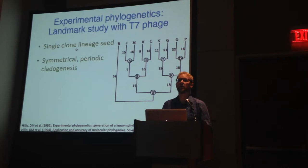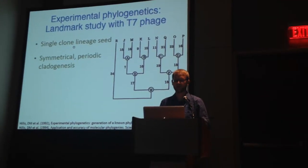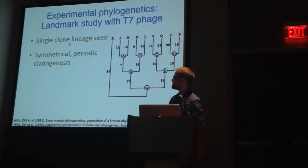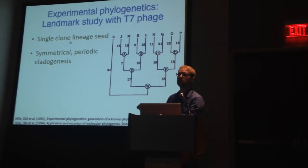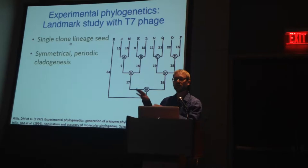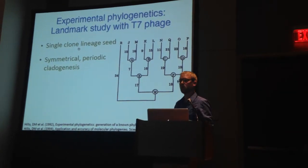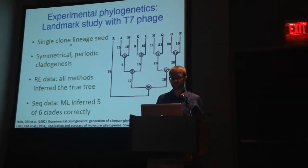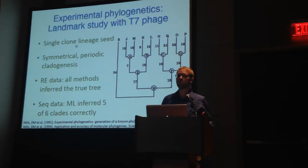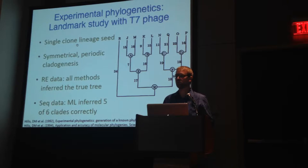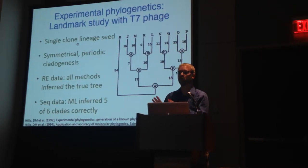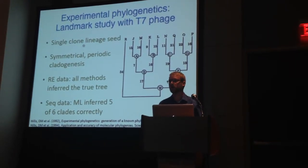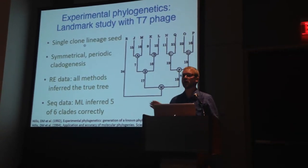A landmark study of experimental phylogenetics was done by David Hillis and collaborators back in 1992. He evolved a bacteriophage T7 evolutionary history starting with a single clone ancestor, then seeding each of these lineages with a clone. He created this symmetrical nine-taxon rooted tree evolutionary history with periodic cladogenesis, and then evaluated different methodologies. Their results were that with restriction endonuclease data, all methods predicted the true tree in terms of clade support. However, with sequence data, maximum likelihood was only able to infer five to six clades correctly.